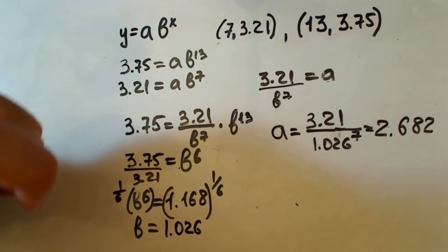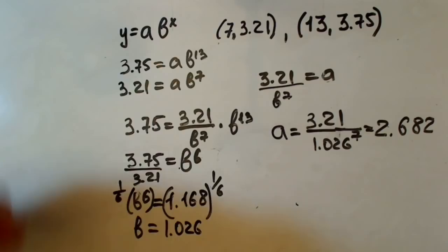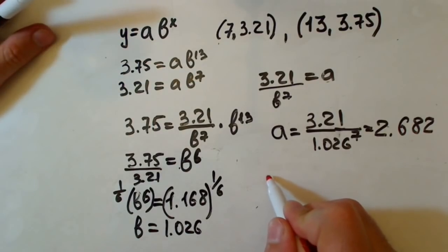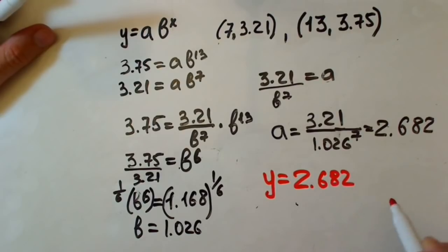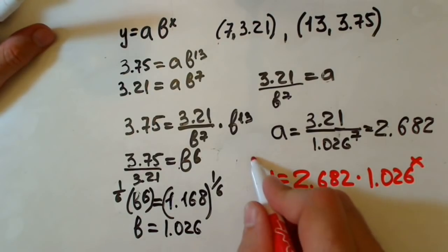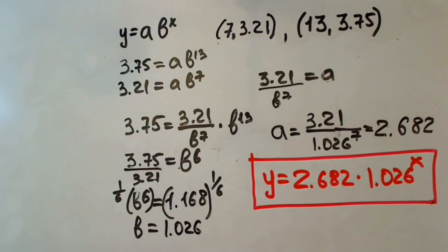What is our equation in the end? Our function equals y equals ab. A is 2.682 times b, which is 1.026 to the x. And this is our answer. Thank you.